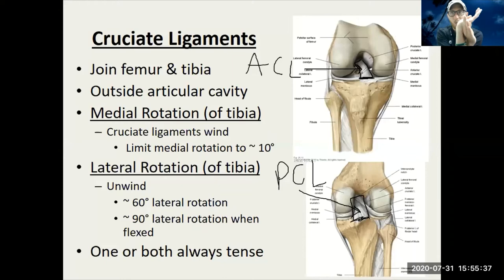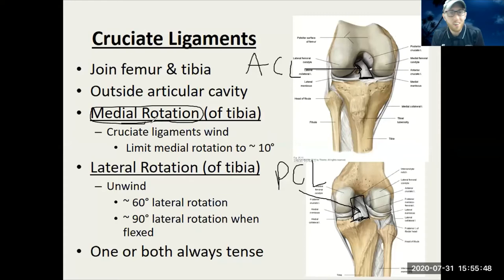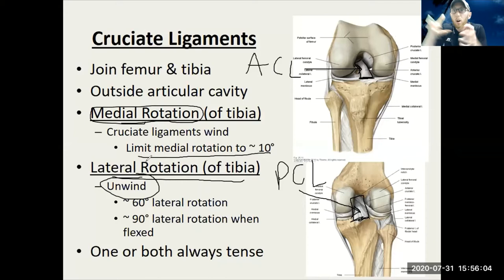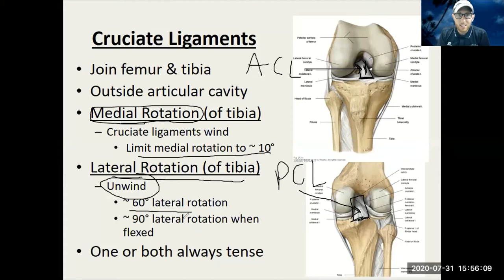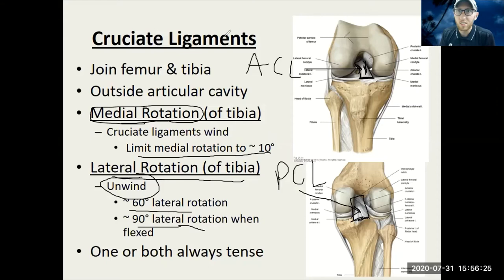The cruciate ligaments are set up almost like they're winding, like a twisted towel. When you laterally rotate the tibia, that unwinds the ligaments, so you can get up to 90 degrees of lateral rotation, especially when the knee is flexed — much more lateral rotation than medial rotation. The ACL is the weaker of the two cruciate ligaments, but it's still very strong.